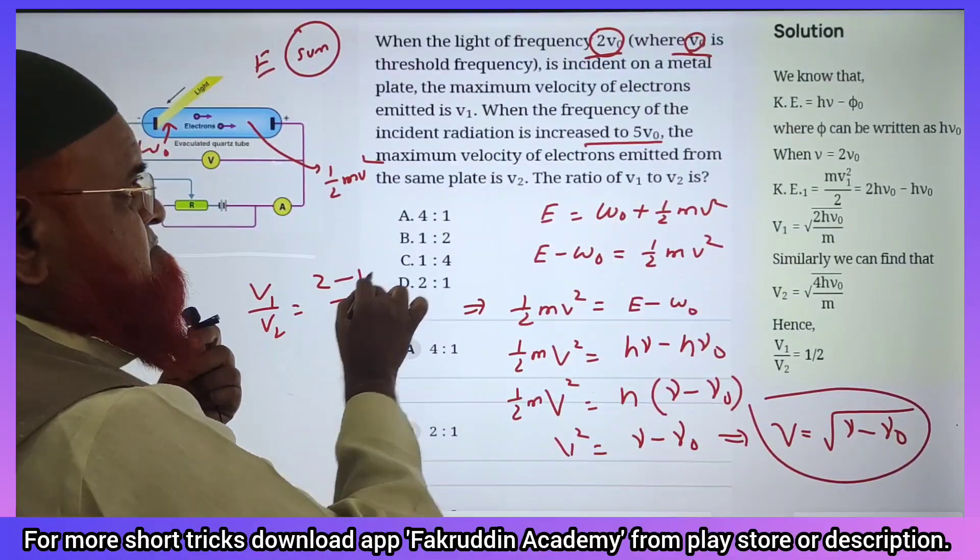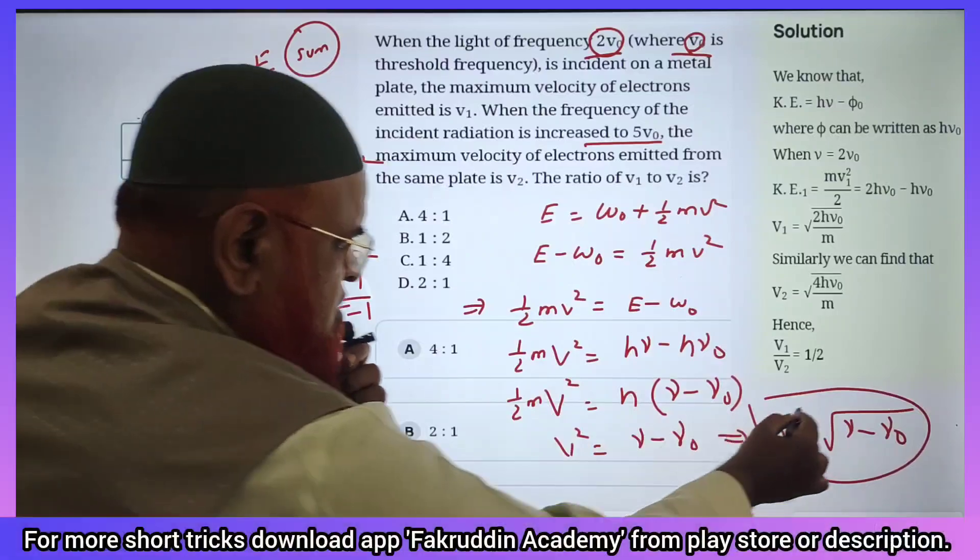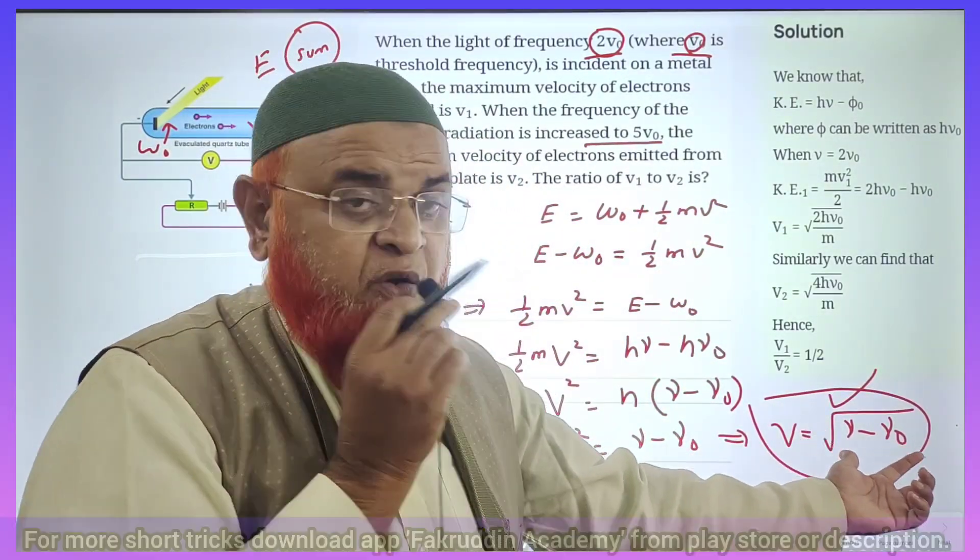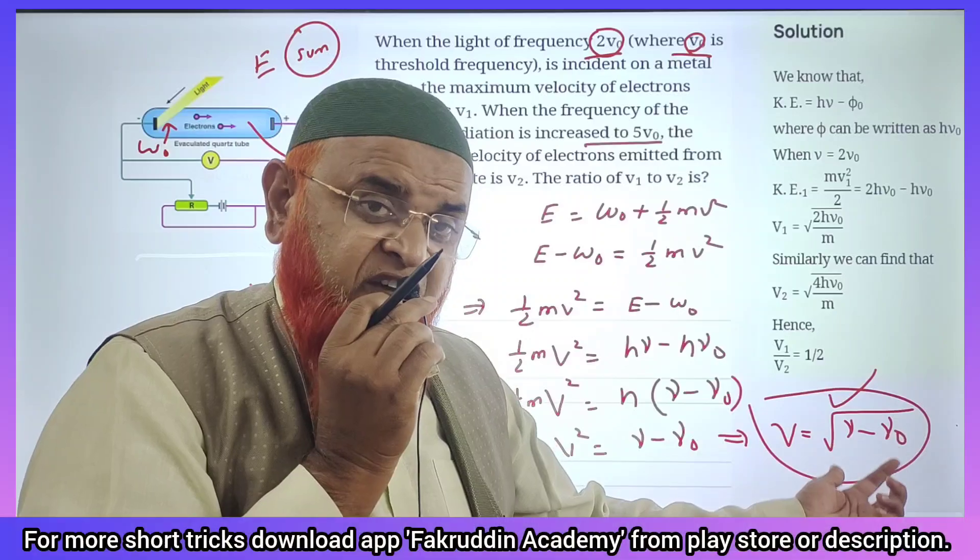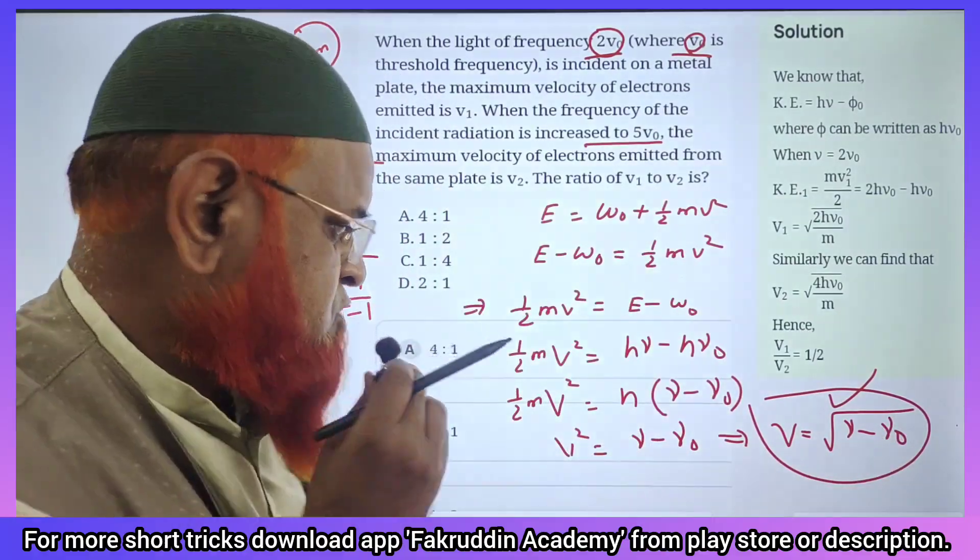So we write 2 minus 1 divided by 5 minus 1 under root because this is the concept here. Velocity is directly proportional to square root of frequency differences—frequency of the incident light minus frequency of the threshold.